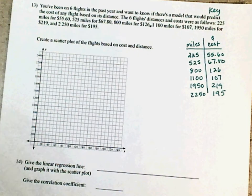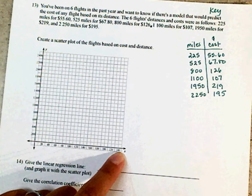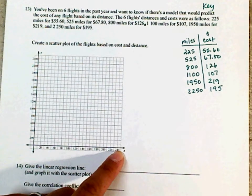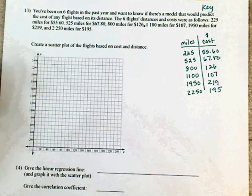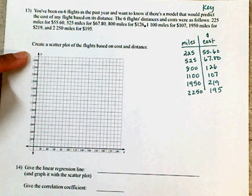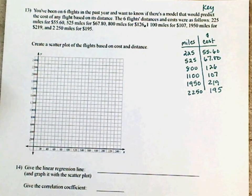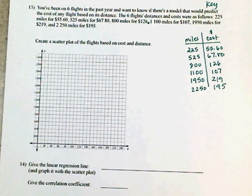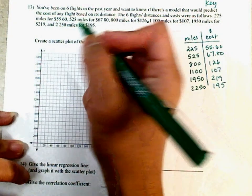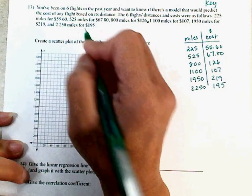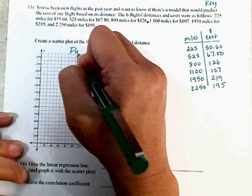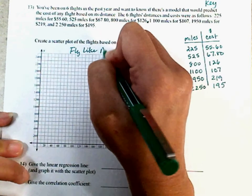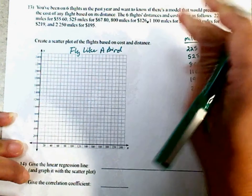800 miles for $126, 1,100 miles for $107, 1,950 miles for $219, and 2,250 miles for $195. Must be depending on when you fly and where you're flying to. Then it says to create a scatter plot. Now, I have numbers down here for you, but you don't have to use those numbers. Let's give it a name. Fly like a bird, I guess. You can call it anything you want, as long as it somehow relates to this.